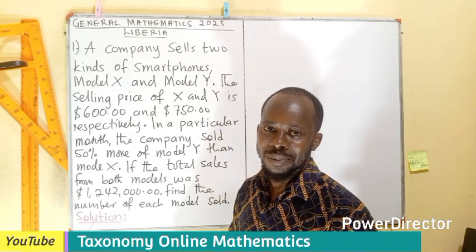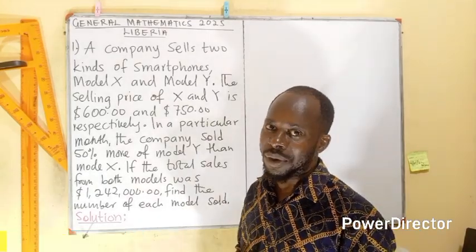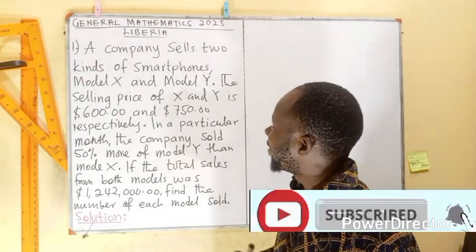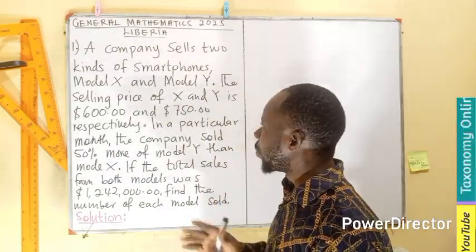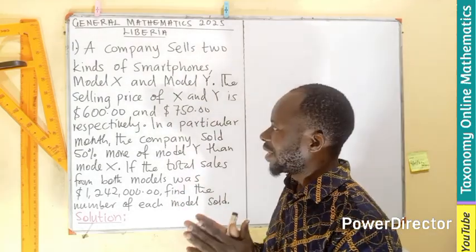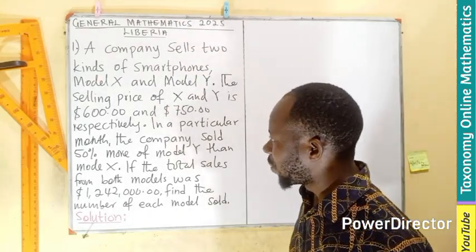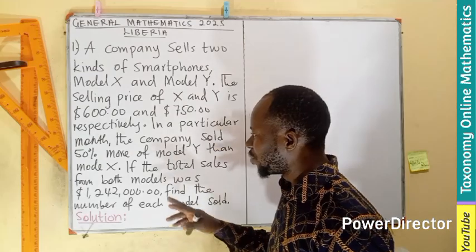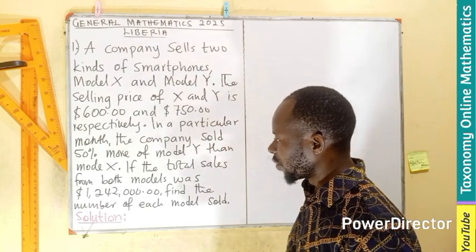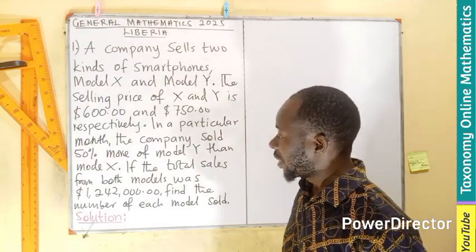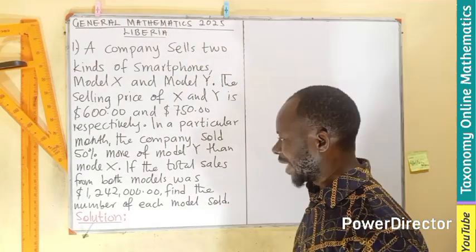Welcome to another episode. We are picking the General Mathematics 2025 for the librarian. The first question: a company sells two kinds of smartphones, model X and model Y. The selling price of X is $600 and Y is $750. In a particular month, the company sold 50 percent more of model Y than model X, and the total sales from both models was $1,242,000. We have to find the number of each model sold.